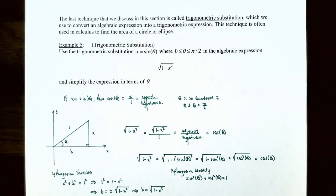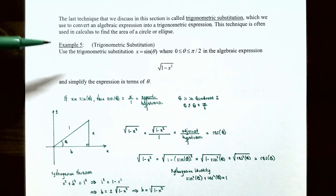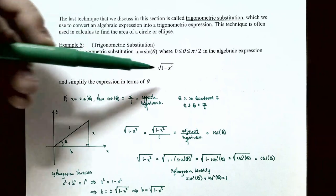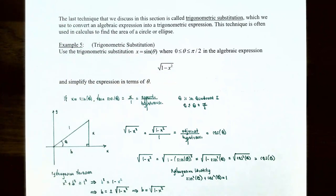The last technique in this section is trigonometric substitution, which is very valuable in calculus for converting an algebraic expression into a trigonometric expression. This technique is often used in calculus to find the area of a circle or an ellipse. Example 5 — Trigonometric substitution: use the substitution x = sin θ, where θ is between 0 and π/2 inclusive, to simplify the algebraic expression √(1 − x²) in terms of θ.